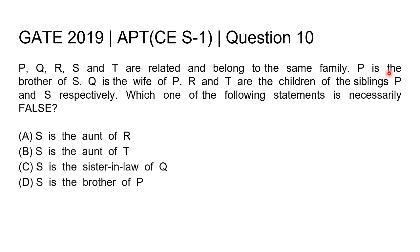P is the brother of S, so let us write P here and S like this. Now Q is the wife of P, so P will be the husband of Q — let us denote H for husband and W for wife. The next information is R and T are the children of siblings P and S respectively, so P and Q have one child called R, and S with someone has another child called T.